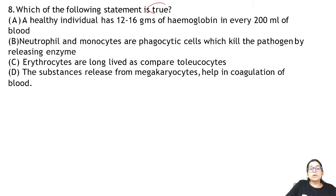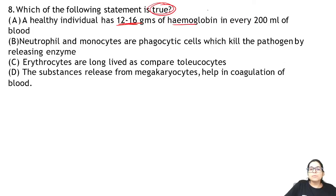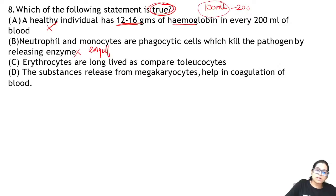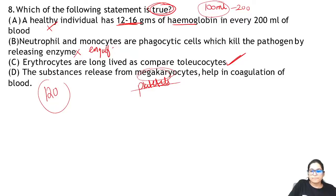Zoology Question 8: which statement is true? In a healthy individual there is 12-16 grams of haemoglobin per 100 ml of blood — not 200 ml. Neutrophils and monocytes are phagocytic cells that engulf pathogens, not just release enzymes. Platelets come from megakaryocytes. The correct statement is that erythrocytes last 120 days. Answer is C.